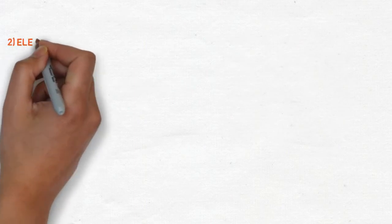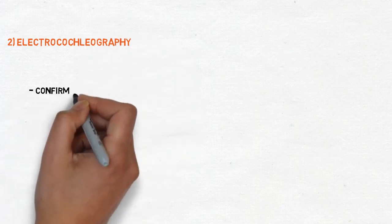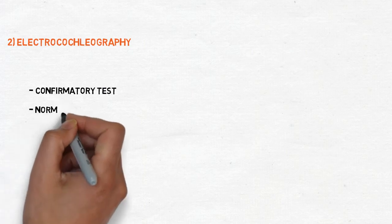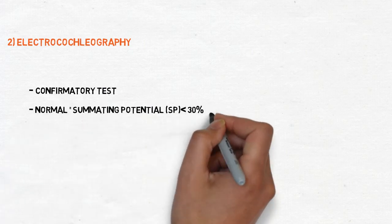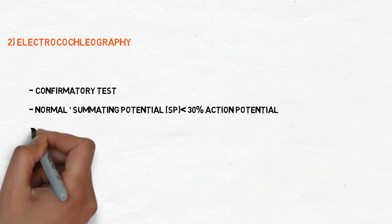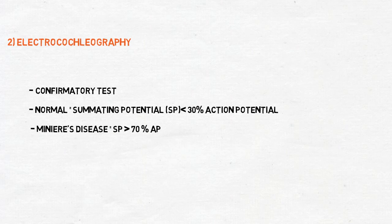The another method for diagnosis is electrocochliography. It is an invasive procedure but confirmatory test. In normal ear the summating potential is less than 30% of action potential. But in Meniere's disease the summating potential is greater than 70% than action potential.